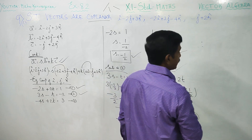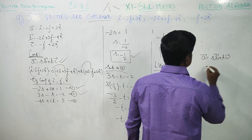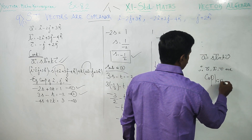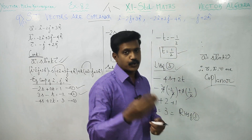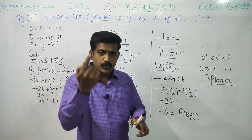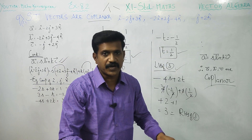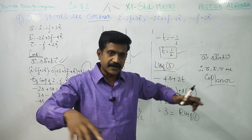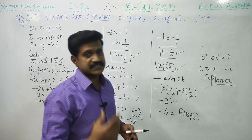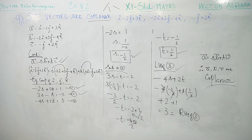Therefore, a vector can be written as a linear combination of the other two vectors. Therefore a vector, b vector, and c vector are coplanar — meaning they lie on the same plane. This is a very important five-mark sum; don't miss this. Thank you.